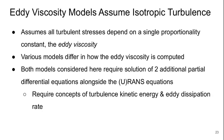These eddy viscosity models assume what we call isotropic turbulence. Basically it means that all the turbulent stresses depend on a single proportionality constant, the eddy viscosity. So there's no variation in the directionality of this eddy viscosity.